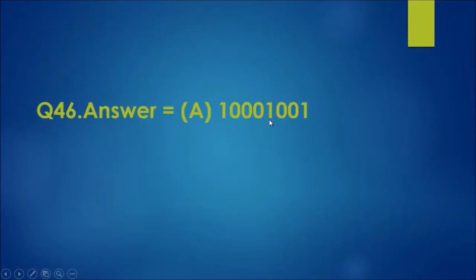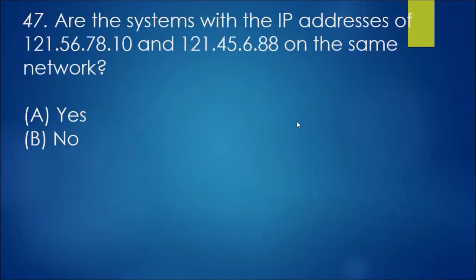Question 47: are the systems with the IP addresses of 121.56.78.10 and 121.45.6.88 on the same network? Another interesting question we got here. The answer we have here is yes, they are on the same network because they're a class A network and they've got the first lot of numbers, first octet is the same. 121 is the same as the 121 there. Class A, only one has to be the same, so yes, they're in the same network.